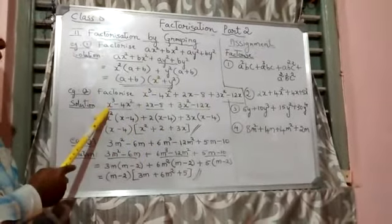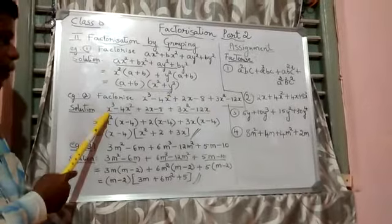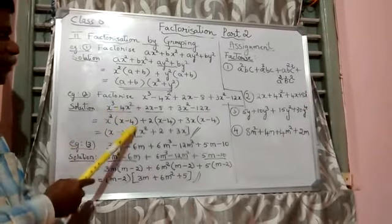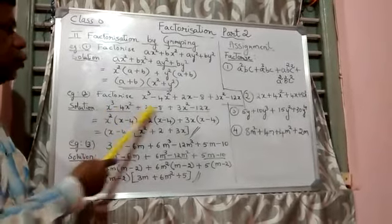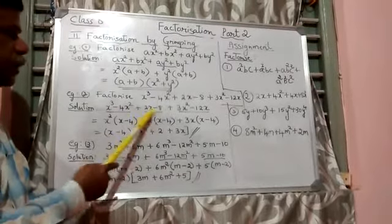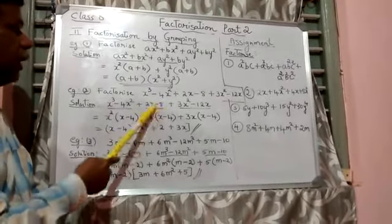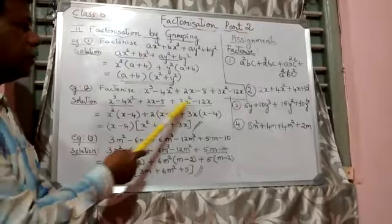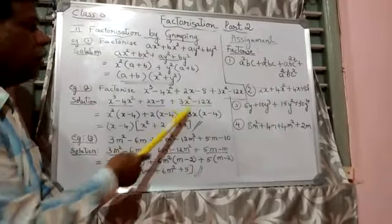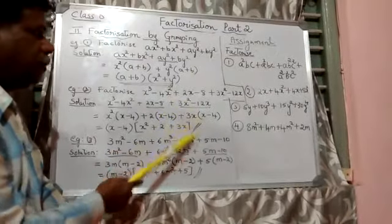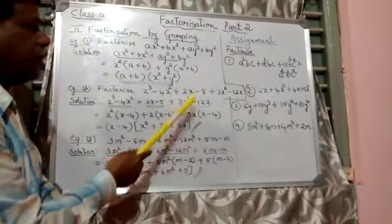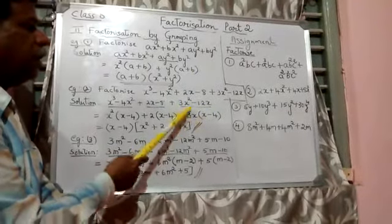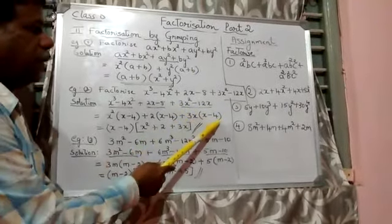In the first group, x² is common — take it out. x minus 4 remains. In the second group, 2 is common — take 2 out. x minus 4 remains. In the fifth and sixth terms, 3x is common in both terms, so 3x is taken out. Remaining is x minus 4.